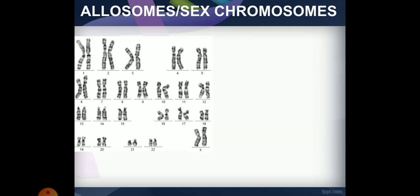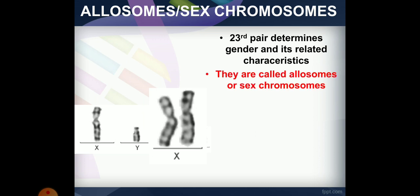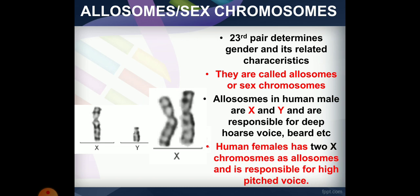Allosomes are sex chromosomes — this is the 23rd pair. For females it is XX, and for males it is XY. Allosomes are responsible for characteristics such as deep voice and beard in males, and high-pitched sound in females.